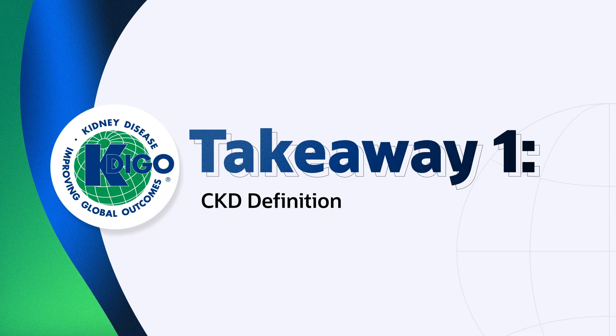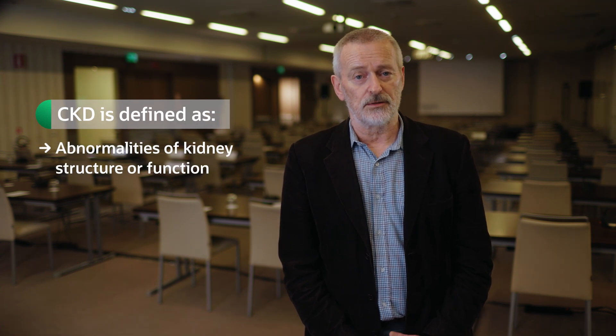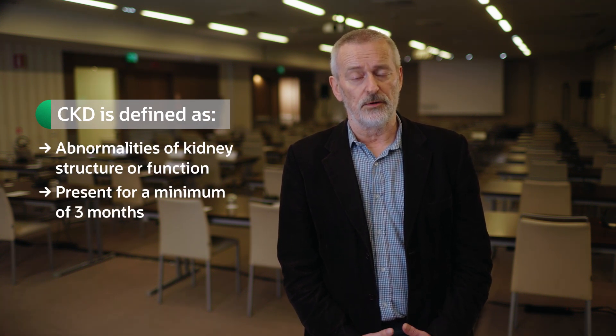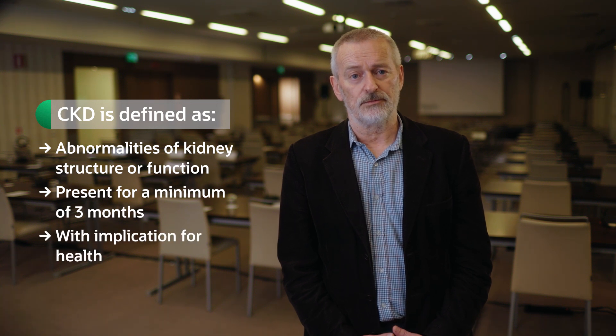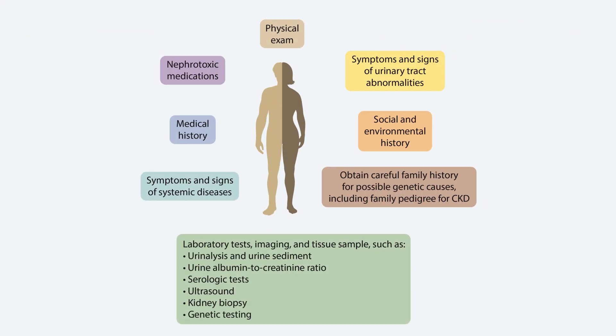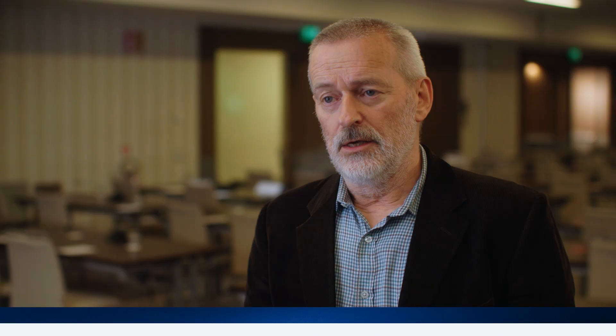Let's remind ourselves of the definition of chronic kidney disease. CKD is defined as abnormalities of kidney structure or function present for more than three months with implications for health. What is frequently underappreciated is that the definition includes many different markers of kidney damage, not just decreased GFR and increased ACR, and it's also crucial that the cause of CKD should be actively sought. CKD is classified according to cause, GFR and ACR — the CGA classification — to establish severity and guide the type and timing of interventions.